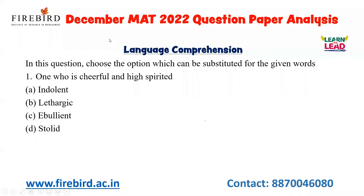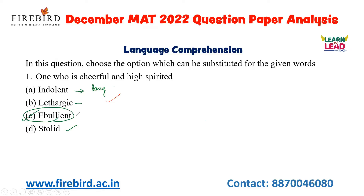The first question asks: choose the option which can be substituted for the given words. The phrase is 'cheerful and high-spirited.' Indolent means lazy and lethargic. Stolid means showing little emotion. The best one-word substitute for 'cheerful and high-spirited' is ebullient — that is your answer.